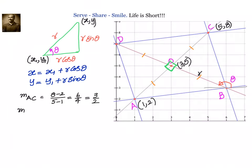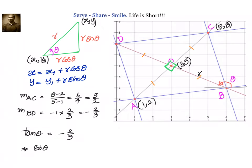Since slope of AC is 3/2, we immediately know slope of BD is the negative reciprocal: -1 × (2/3) = -2/3. So slope of BD is -2/3, meaning tanθ = -2/3. From this, sinθ = -2/√13 and cosθ = 3/√13.